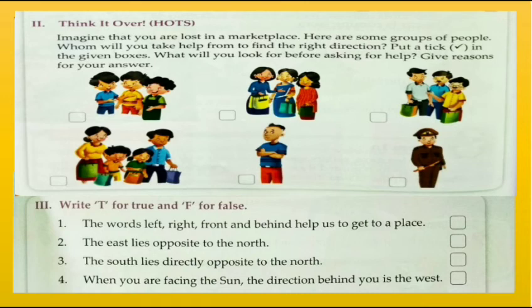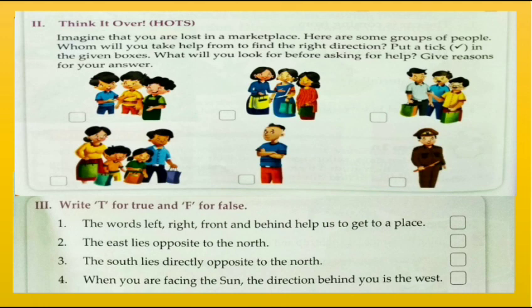Now let's do true and false. 'The words left, right, front, and behind help us to get to a place' — this is true. 'The east lies opposite to the north' — this is false. 'The south lies directly opposite to the north' — this is true. 'When you are facing the sun, the direction behind you is the west' — this is also true. We have now completed our chapter and textbook exercise. Hope you have understood the chapter, and if you have any problem, please watch the video again. Thanks for studying with Study Bus!